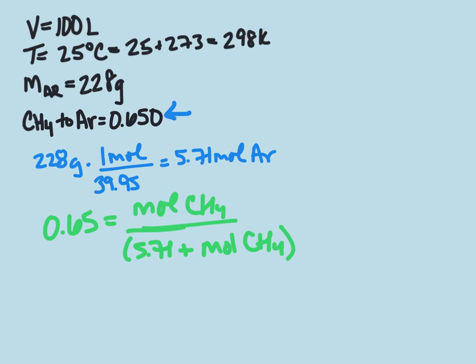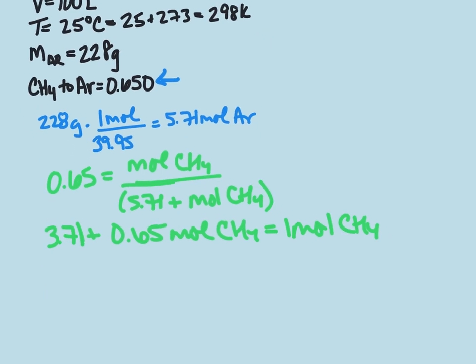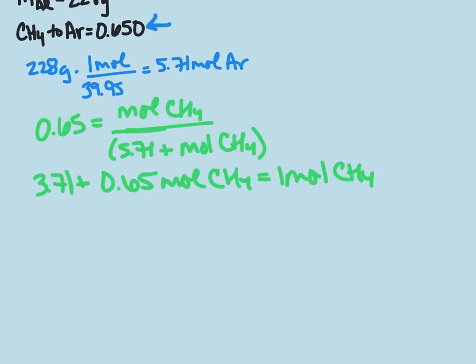And when we solve for that, when we simplify this, we're going to have 3.71 plus 0.65 mole CH4 equals mole CH4, or 1 mole CH4. And that will then simplify to 3.71 equals 0.35 mole CH4. And then finally, we get that our mole CH4 equals 10.6.